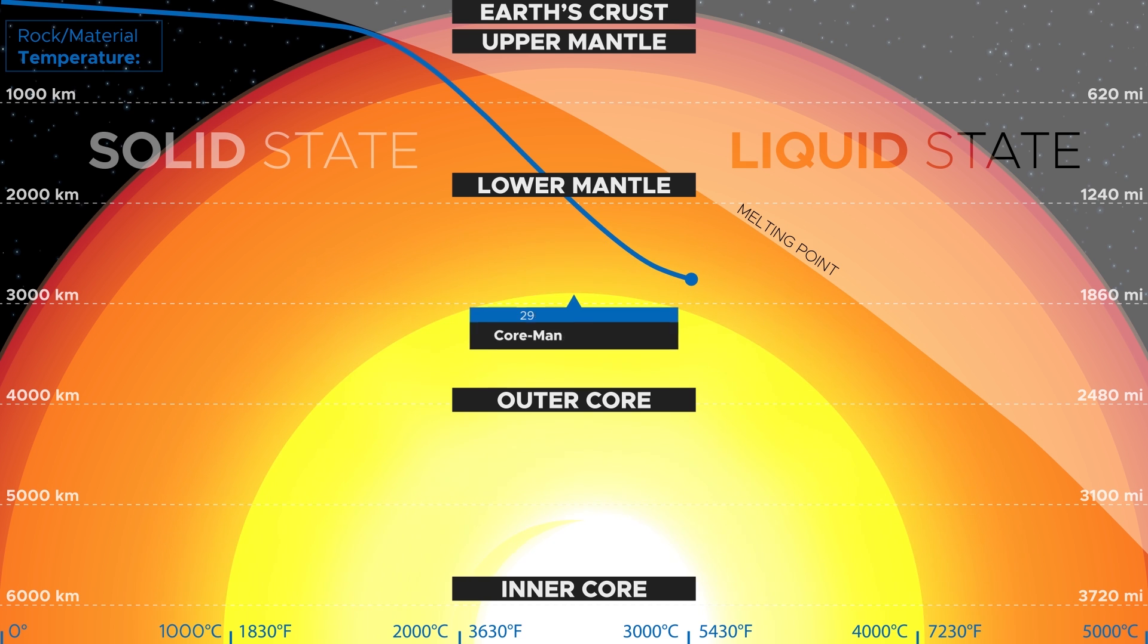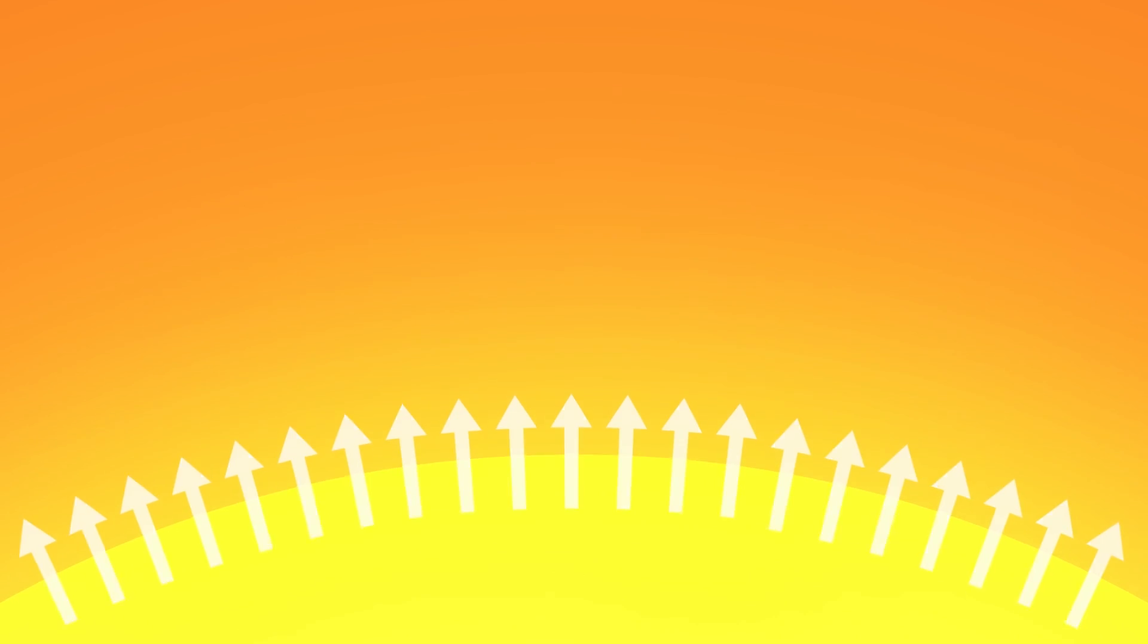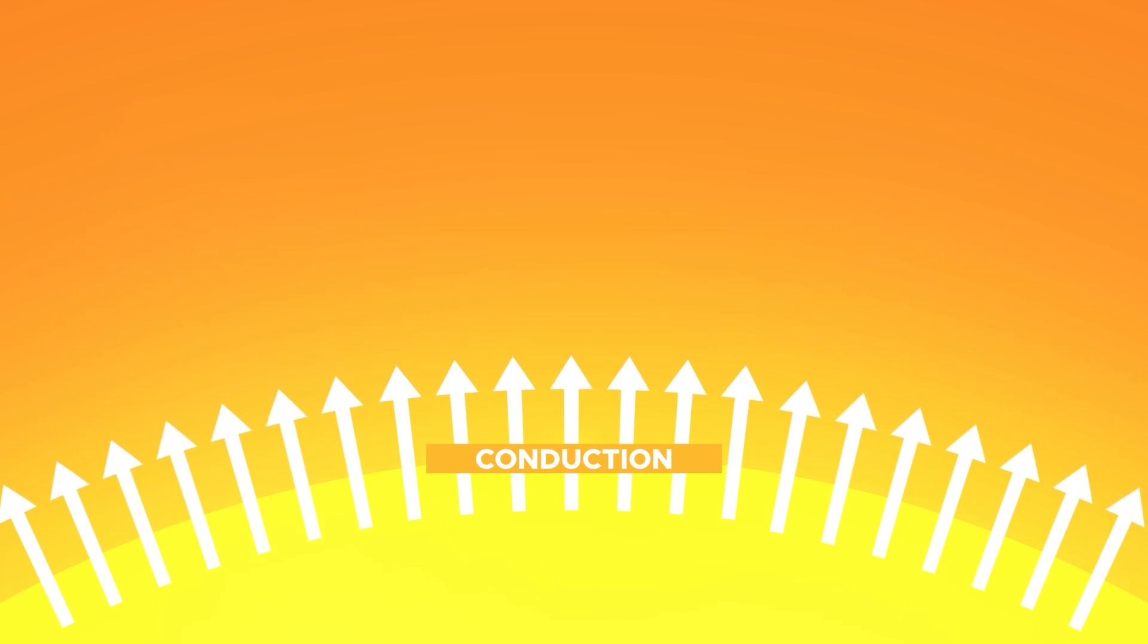The formation of a mantle plume starts at the core-mantle boundary. Here, in the thermal and chemical boundary layer at the base of the mantle, which separates the liquid outer core from the solid lower mantle, temperatures rise rapidly, faster than in any other layer. The temperature of the outer core is already approximately 1,000 degrees Celsius higher than that of the overlying mantle, just a few kilometers above. This causes large amounts of heat to be transferred into the mantle through conduction, where it heats up the rock, causing it to start rising. A mantle plume forms.